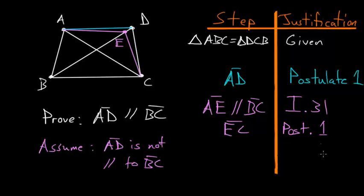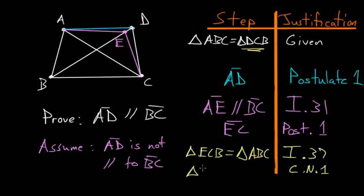So we know due to Book 1, proposition number 37, that these two triangles are equal. So triangle ECB is equal to triangle ABC. But we already know that triangle ABC is equal to triangle DCB. So by common notion number one, things which are equal to the same thing are equal to each other. So triangle ECB must also be equal to triangle DCB.